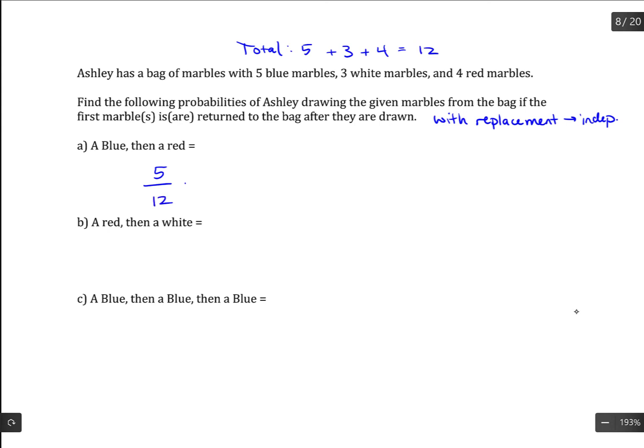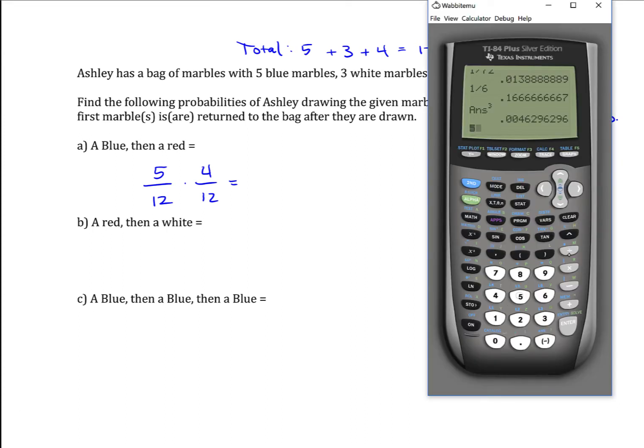So 5 over 12 is the probability of a blue, and a red marble is 4 over 12. That would be 5/12 times 4/12, which is 0.139.